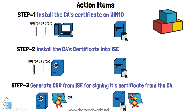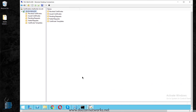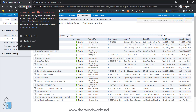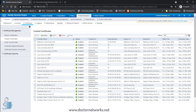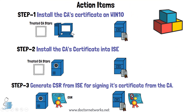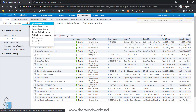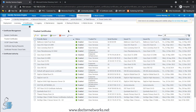Step two is done. Now comes step three: generating a CSR from ISE and getting it signed by the CA. Both Windows 10 and ISE now trust this CA. The rationale is that the certificate ISE currently presents is self-signed. If we get it signed by our CA, Windows 10 — which already trusts that CA — will recognize it and not throw an HTTPS error.